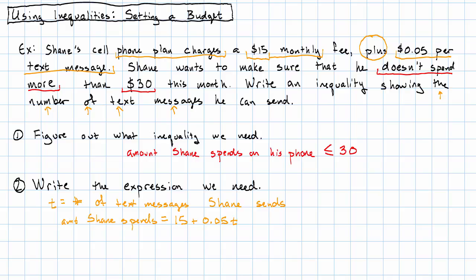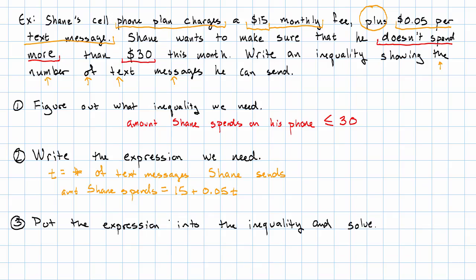Now, all that's left is the algebra. We put our expression into the inequality we wrote in step one. 15 plus 0.05 T is less than or equal to 30. And then, we solve.